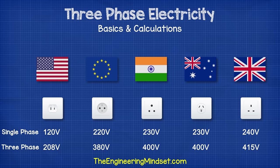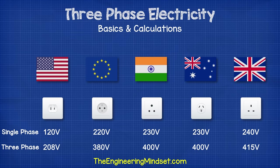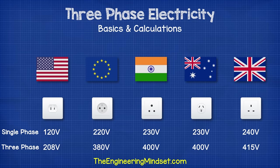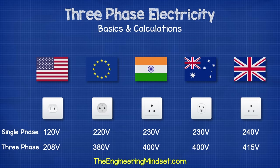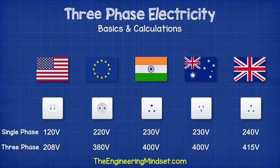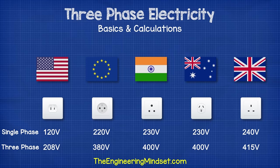Looking at the different voltages: in the US we get 120 volts from a single phase or 208 volts from three phases. In Europe, we get 220 volts single phase or 380 volts three phase. Australia and India get 230 volts single phase or 400 volts three phase. In the UK, we get 240 volts single phase or 415 volts three phase. These voltages vary slightly throughout the day.